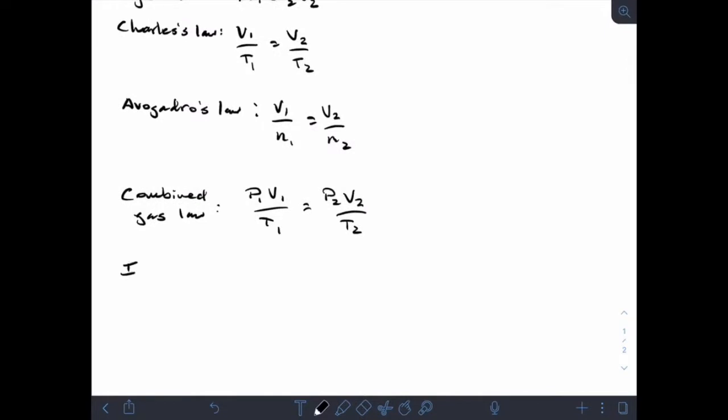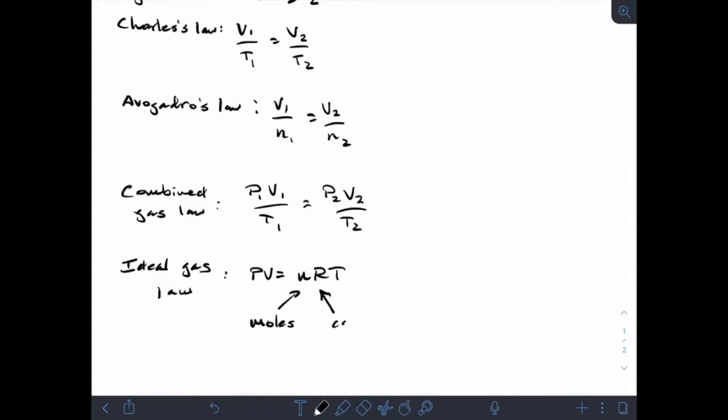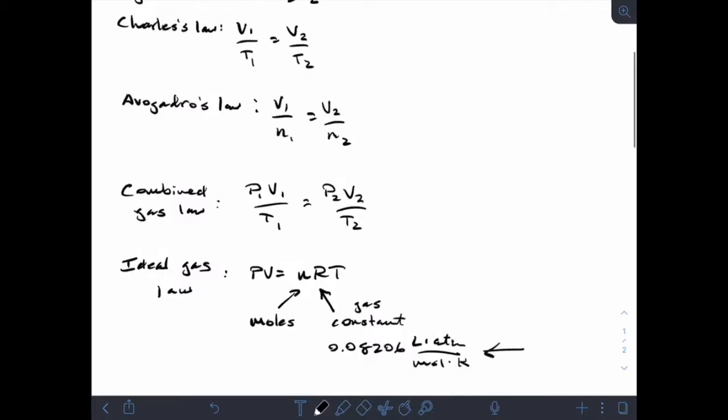Next, and sort of finally for this type of thing, is the ideal gas law. PV equals NRT, or as some students have called it, PIVNRT. So pressure, volume, N is moles, and R is a gas constant. And it has a value of 0.08206 liters atmospheres over moles kelvin. And when you're dealing with anything that has to use R, you have to make sure that these units are, everything else matches those units.